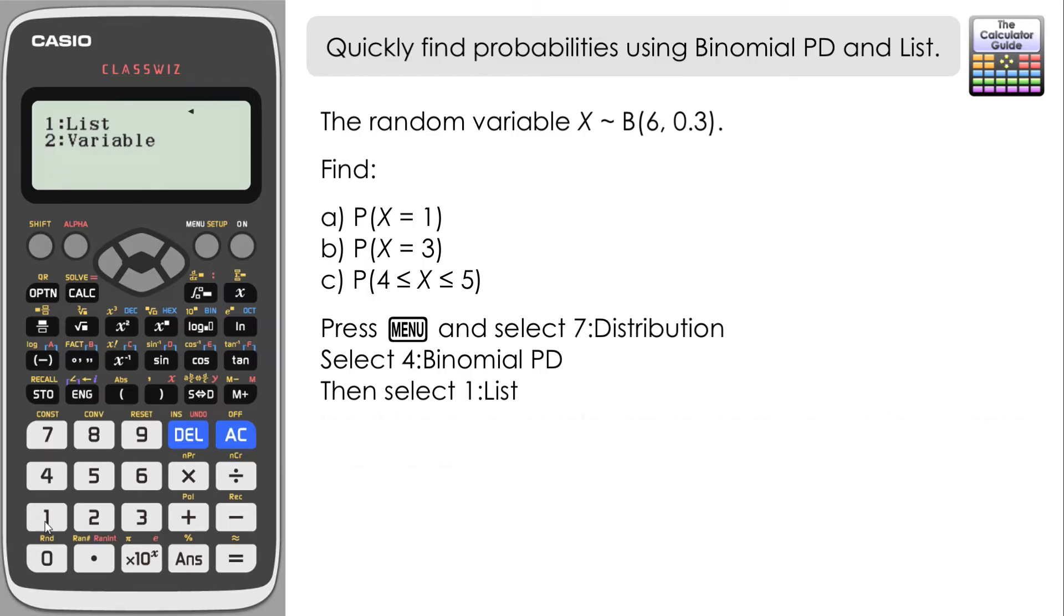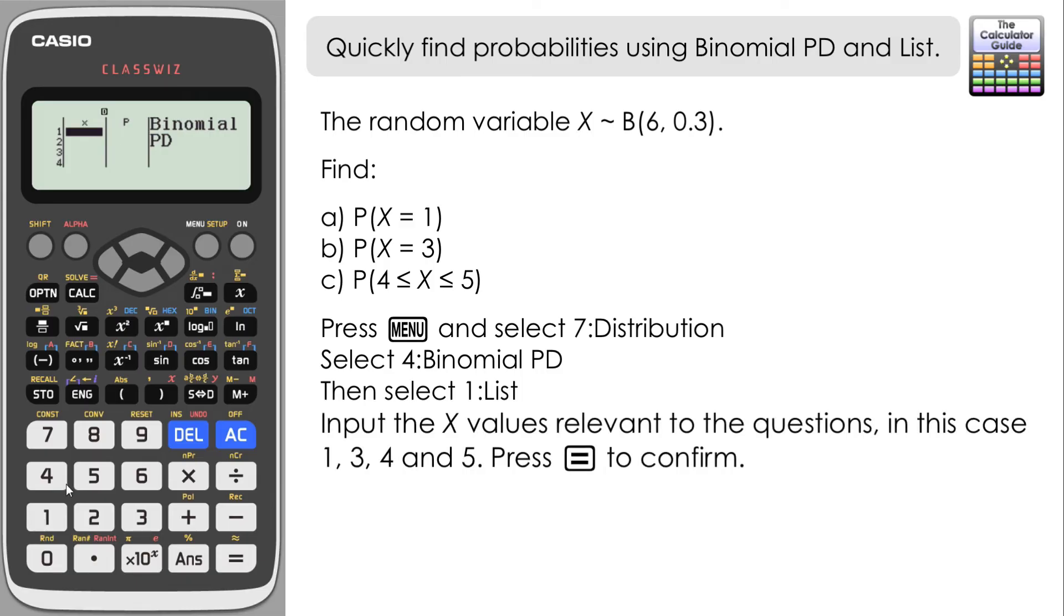Now what we're going to do in the x column is input our relevant values of x. So for the whole of this question, for all three parts, the relevant x values are 1, 3, 4, and 5. Now for the sake of completeness, you can input 2 in there as well if you prefer, but we're not going to be needing it to answer these questions. So it's 1, 3, 4, and 5.